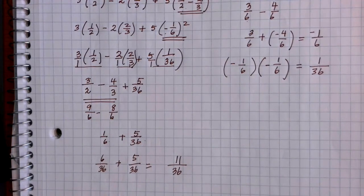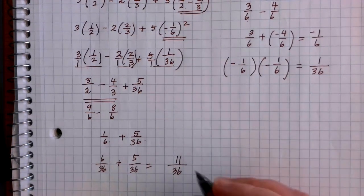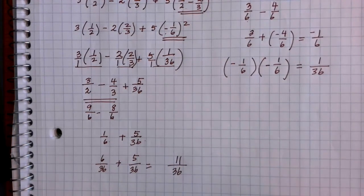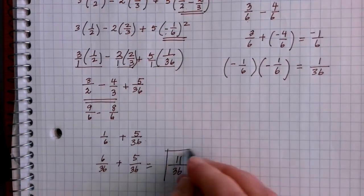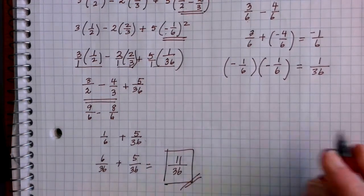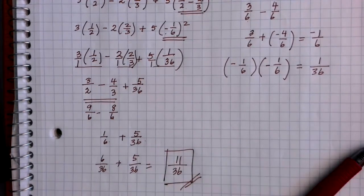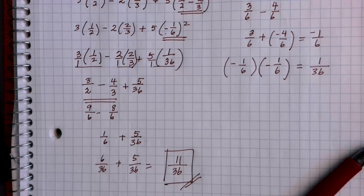Take a second and see if you can reduce the answer. In this case, 11 does not go into 36, so this is my final simplified solution of eleven thirty-sixths. The more fractions and positives and negatives you have, the more little calculations you need to do, but as long as you take your time and do one thing at a time, we can make it through those problems and get to the final simplified solution.